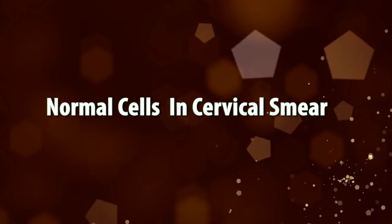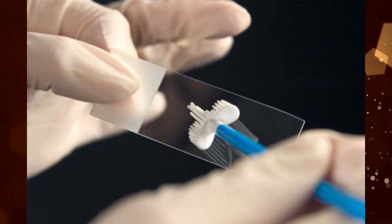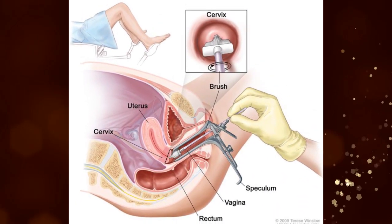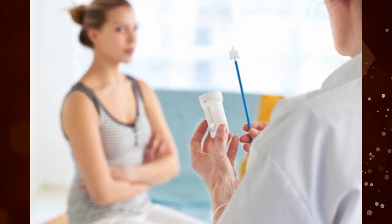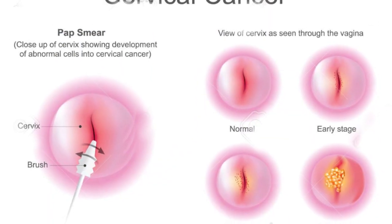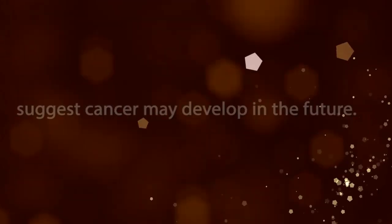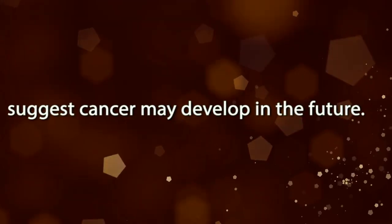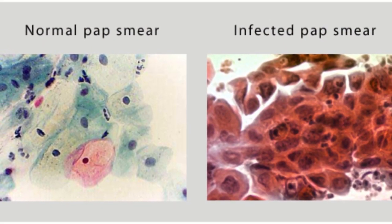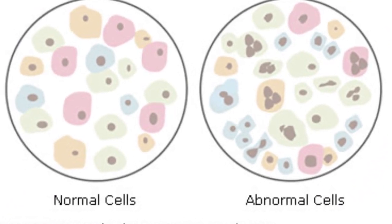A cervical smear, also called a pap test, is a procedure to test for cervical cancer in women. Detecting cervical cancer early with a pap smear gives you a greater chance at a cure. A pap smear can also detect changes in your cervical cells that suggest cancer may develop in the future. For detecting and differentiating these abnormal cells, you must have clear knowledge about normal cells in a cervical smear.